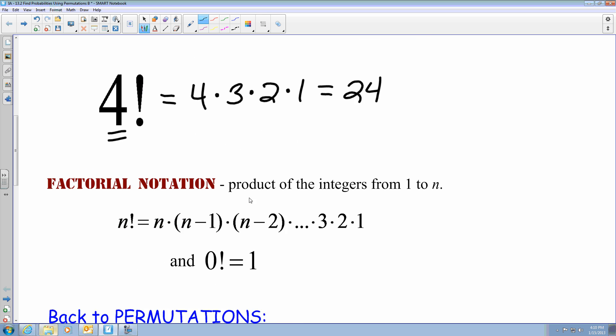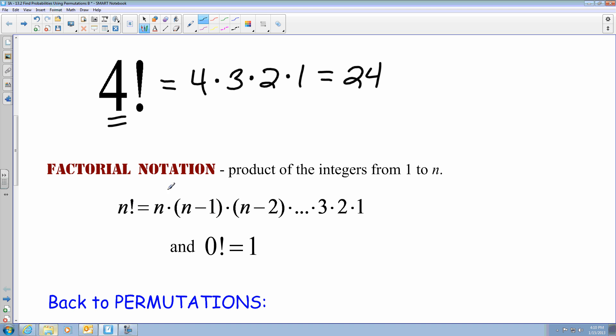So the general term for factorial notation, if I had n factorial, it would equal whatever n may be. It could be 4, it could be 6, it could be 3, it could be 780. And whatever that is for n, you write that n, then you multiply it going down until you reach one. And then you have to keep in mind that zero factorial equals one.